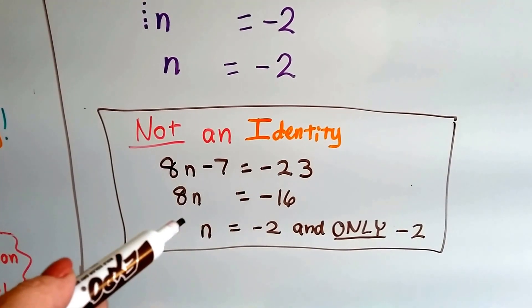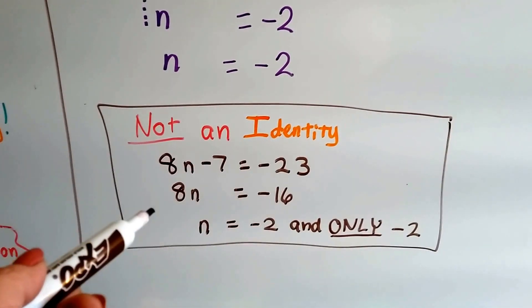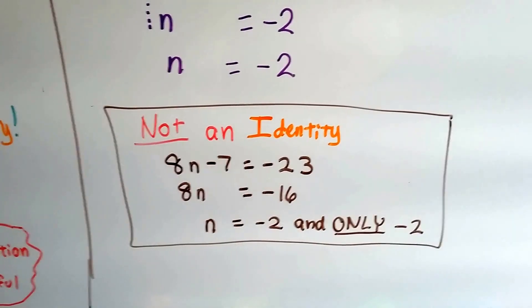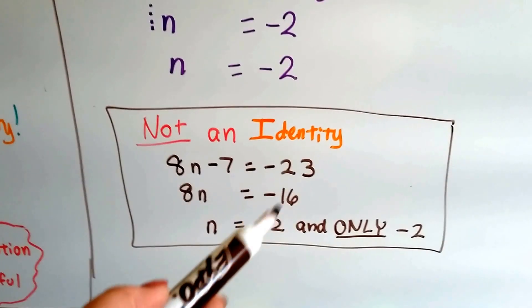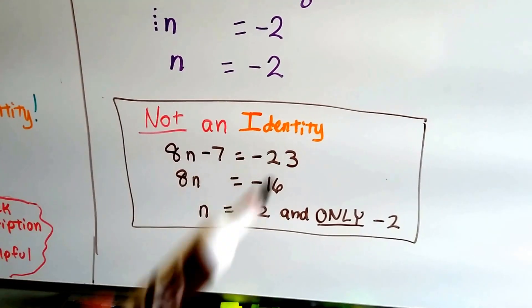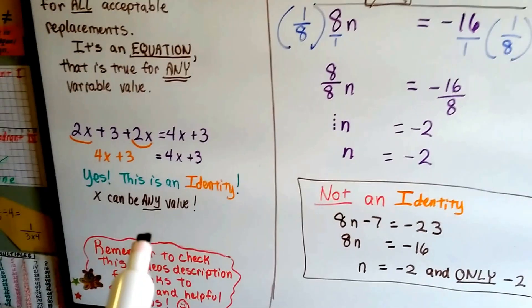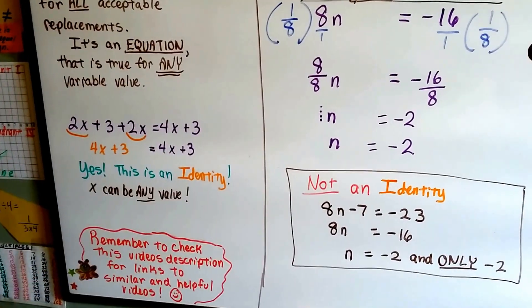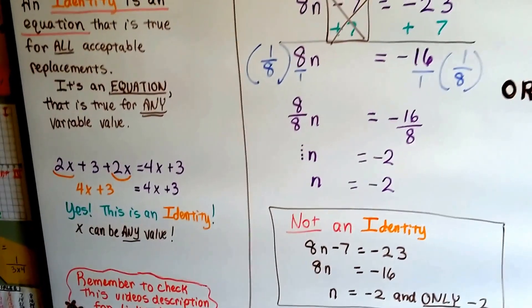That doesn't equal negative 16. So this is not an identity because we can't just put any number in there to make it work. It has to be only a negative 2 to make it work. So it's not an identity. An identity, you can stick any number in for the x and it'll make both sides of the equation true. It'll make the equation true.